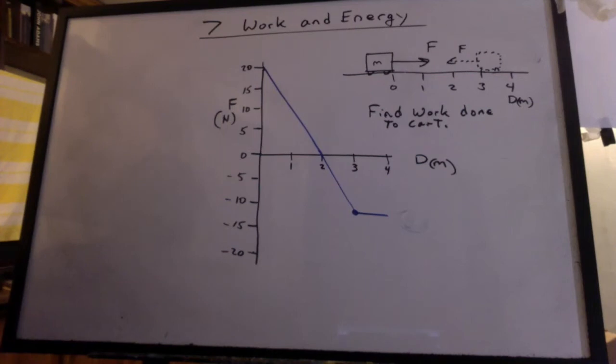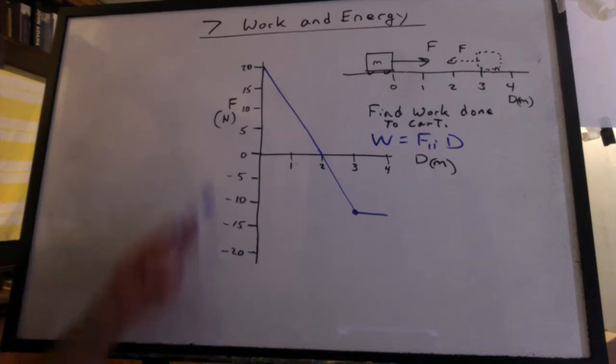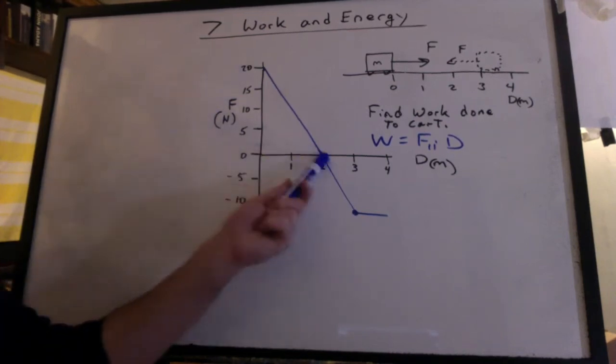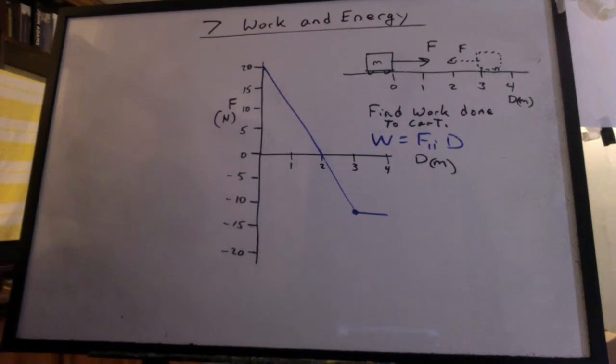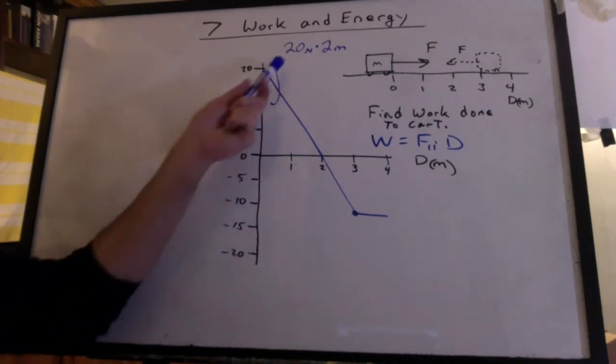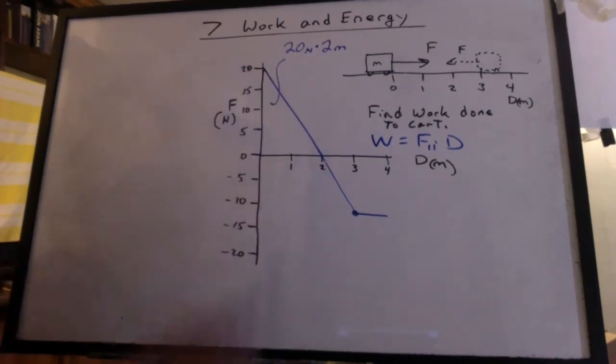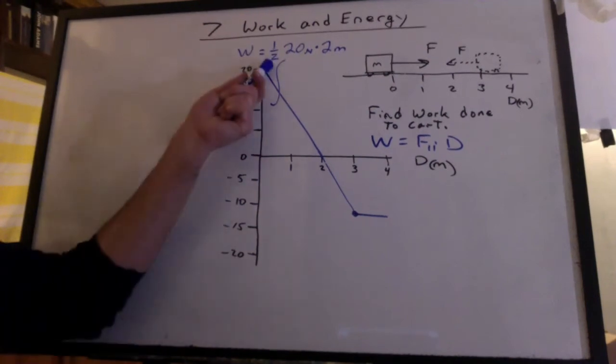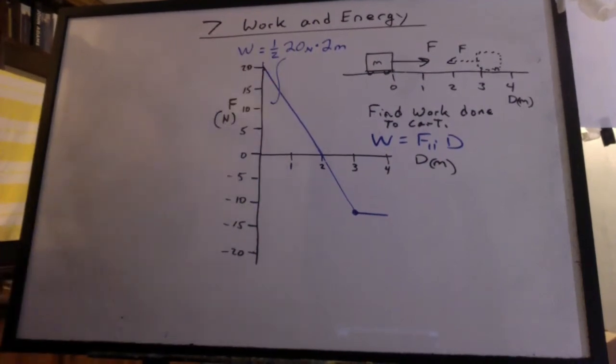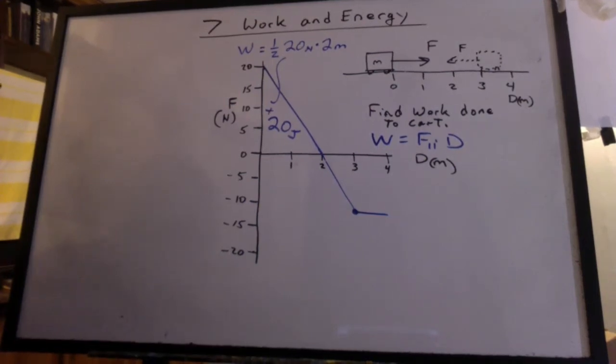Let's look at the graph and find the work done to the cart. Since work is a force times a distance parallel, we can say that the force times a distance is an area. To get that area, we could say 20 newtons times 2 meters. But it's a triangle, so we have to put a half in front. And we have 20 joules. That's a positive 20 joules, resulting in a positive change in kinetic energy.